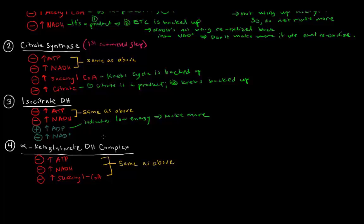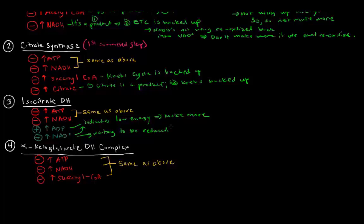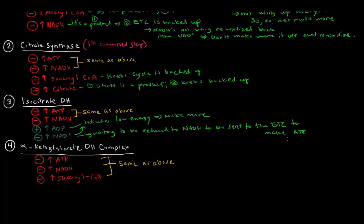High NAD+ also activates isocitrate dehydrogenase. It also indicates low energy. If there's a bunch of NAD+, they're basically waiting to be reduced to NADH to be sent to the electron transport chain to make energy in the form of ATP.